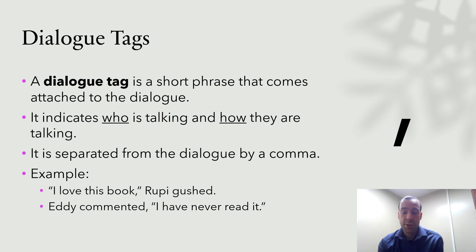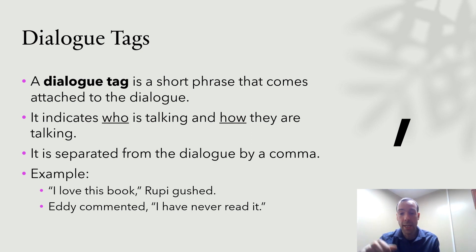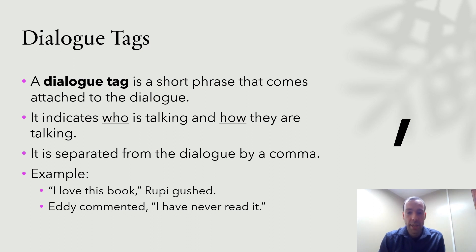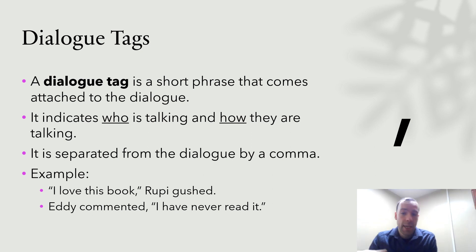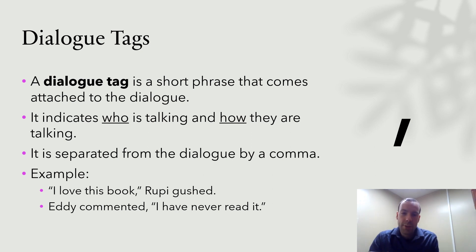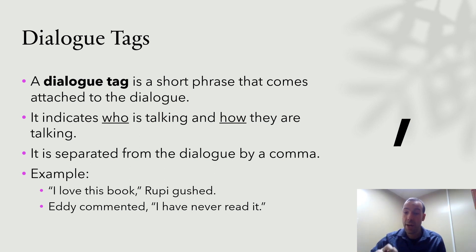A dialogue tag is a short phrase that comes attached to the dialogue. A dialogue tag indicates who is talking and how they are talking. We separate it from the rest of the dialogue by a comma. For example: 'I love this book,' Rupi gushed. Normally we would put a period after 'book,' but because it's the end of a sentence in dialogue, we put a comma inside the quotation marks instead, then add the dialogue tag with the name and a description of how she's talking. Sometimes we just use a plain word like 'said,' but you can get descriptive and colorful to really set the tone.